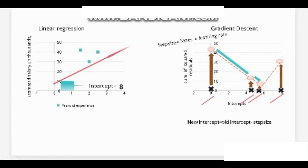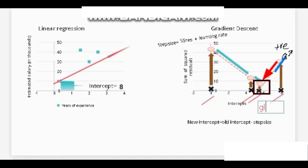When the sum of squared residuals for intercept = 8 is higher than the previous one, we take the derivative of the slope and it turns out to be positive because the right-hand side is facing upwards — therefore we move downwards. This point becomes our global minima, which has the minimum sum of squared residuals, and the corresponding line with intercept equal to 5.7 becomes our best-fit line.